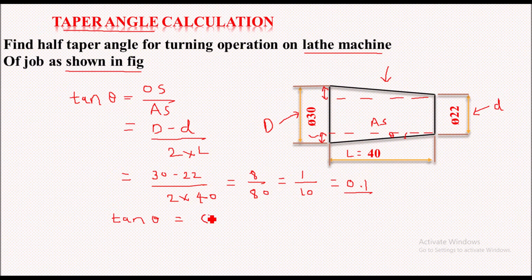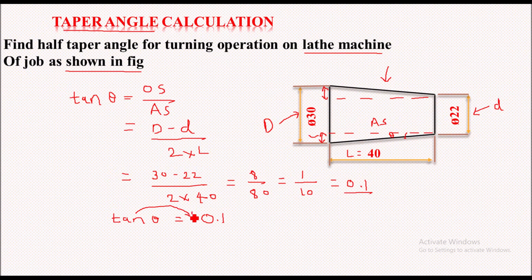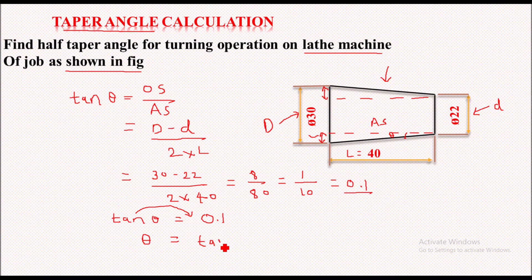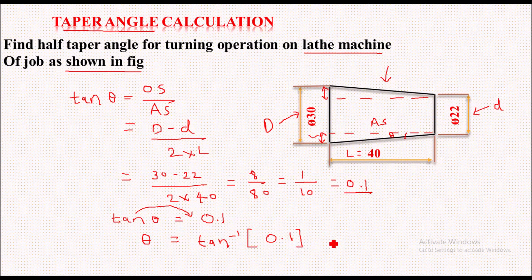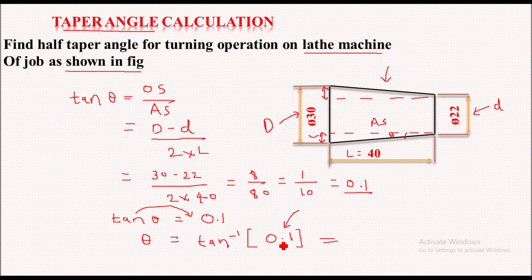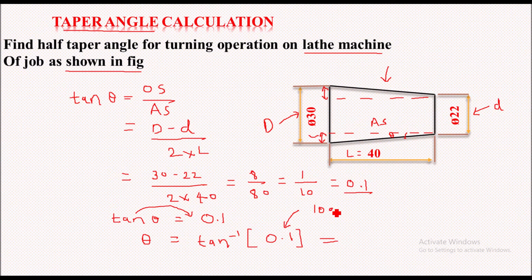So to get the value of theta, we will shift tan to this side, so it will become inverse tan. So tan inverse of 0.1 is nothing but your theta. From logarithmic table we can find the value of tan inverse of 0.1 from log table. So the value from log table will be 5.71 degrees.